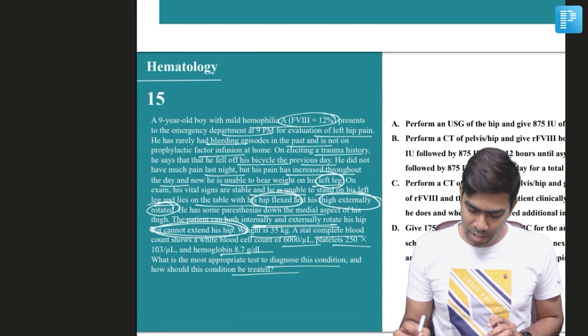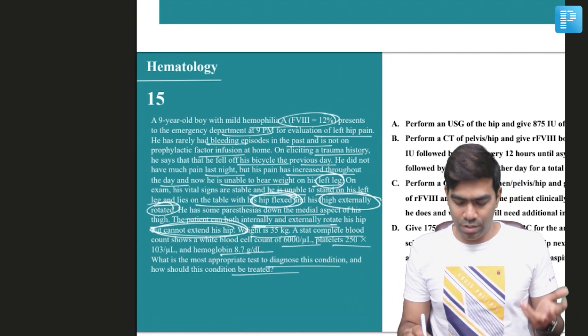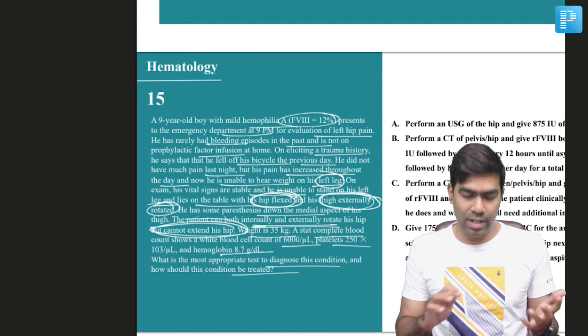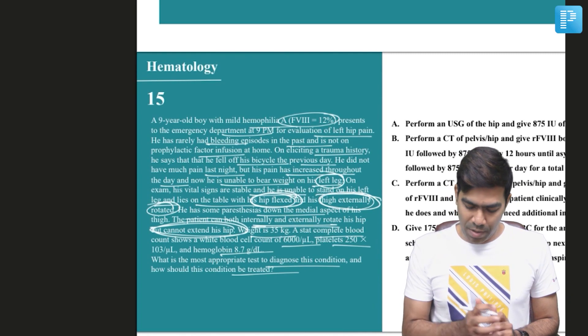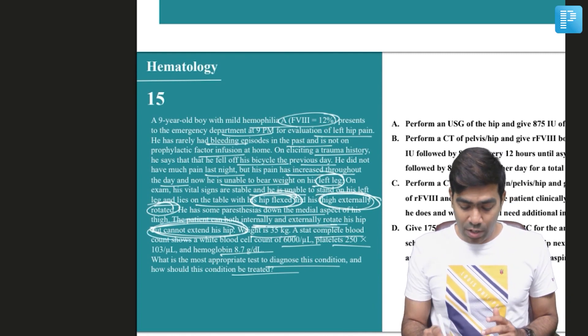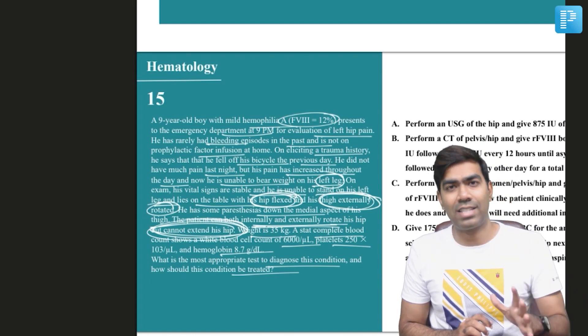But this patient on the other hand is having a hip flexion attitude at presentation and the thighs are externally rotated. And apart from that, the patient can rotate internally and externally but cannot extend the hip. This is a classic history.